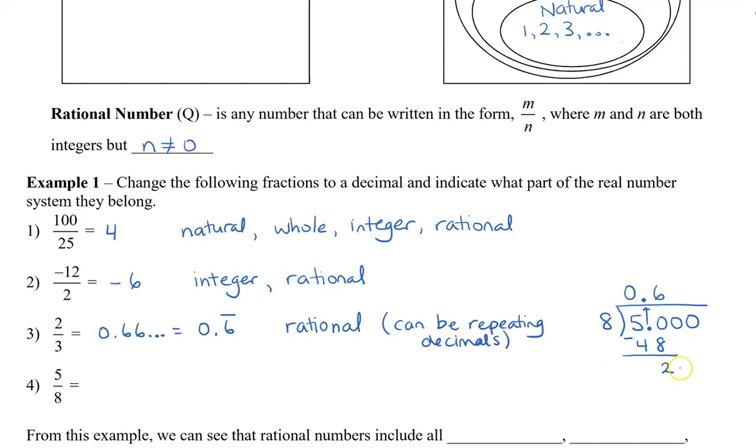So now we bring down the next 0. So 8 goes into 20, 2 times. We place it at the top, beside the 6. 2 times 8 is 16. We subtract again. And now we get 4. Bring down the last 0. Or we can keep adding more if we would like to. But 8 actually goes into 40 5 times. So we can actually stop here. 5 times 8 is 40. And when we subtract, we get a remainder of 0.